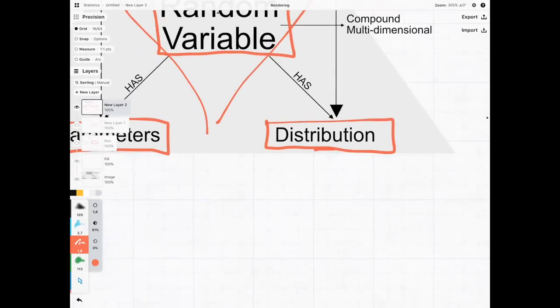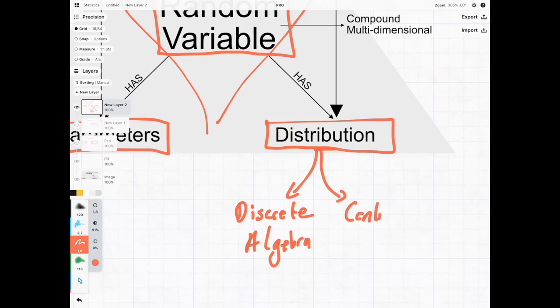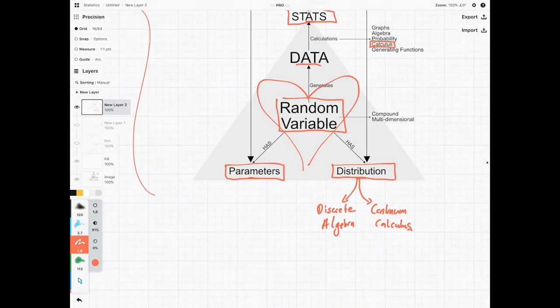The reason why we need calculus is because distributions, as we can see, are going to be split into two types. We have our discrete distributions, where we can get away with using simple algebra. But then we have our continuous distributions, and that's where we're going to be requiring the use of calculus. Once we have these things, we can use this math to create statistics that can estimate our parameters.